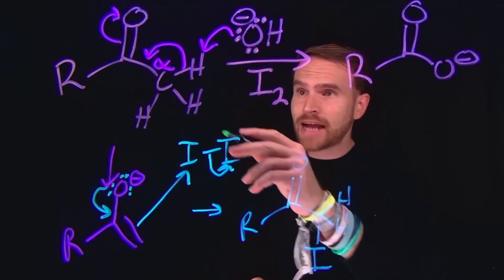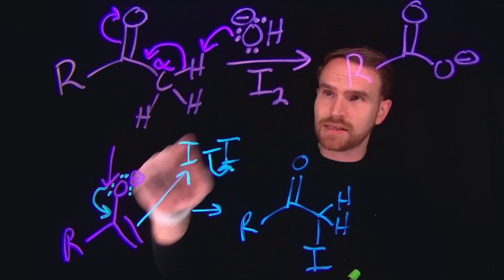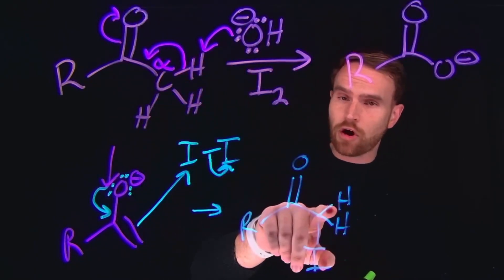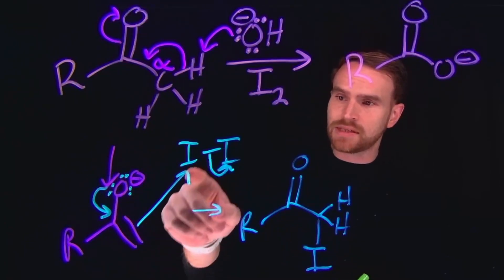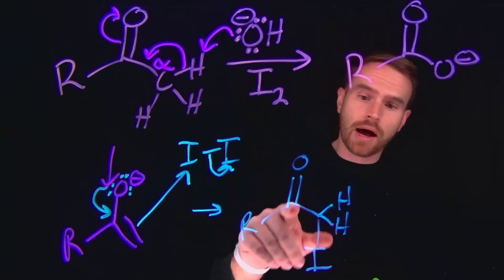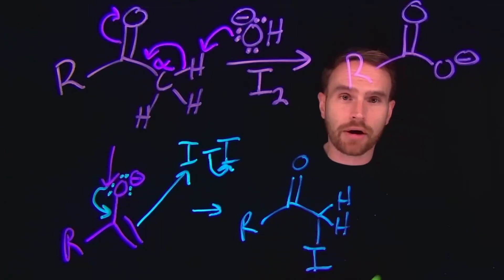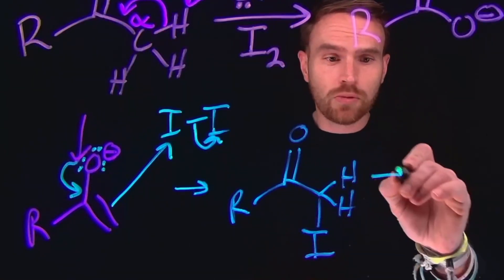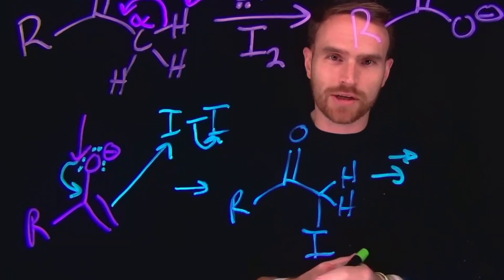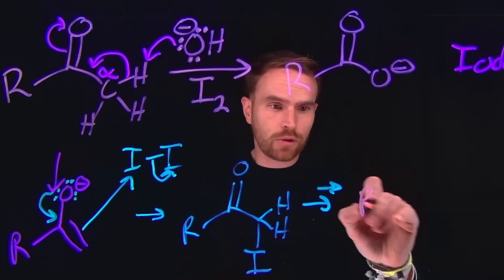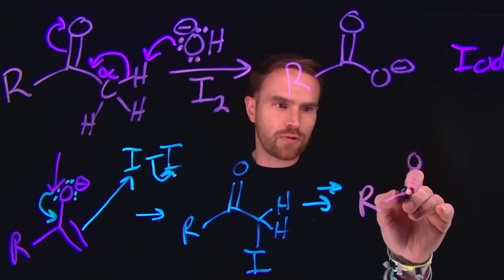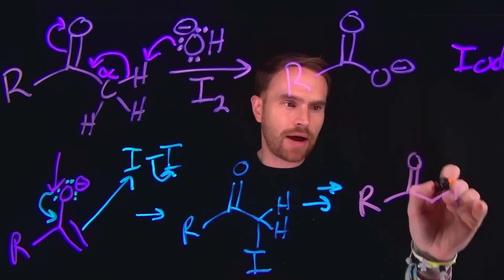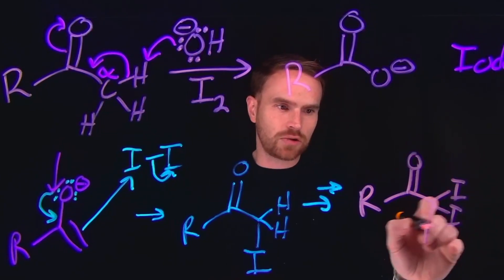And from here, this same reaction where we form the enolate species by deprotonation of an alpha carbon hydrogen, followed by nucleophilic attack of this enolate species to iodine to form a brand new carbon-to-iodine bond at that position. And this will occur two more times in the exact same sequence. So the product following those subsequent transformations is that now you have this carbonyl group, as well as a carbon which now has three different iodine species attached to it.